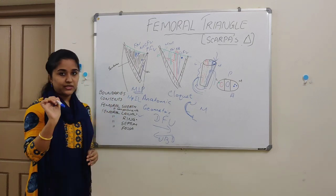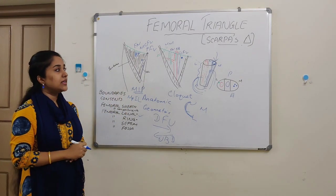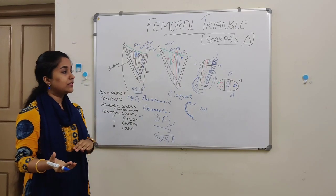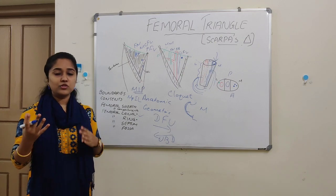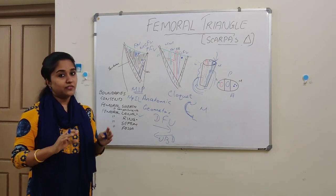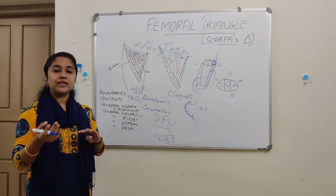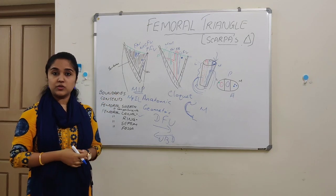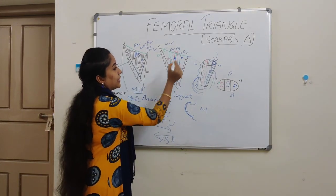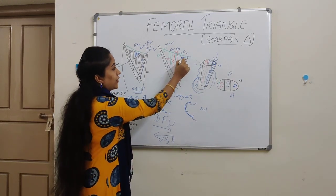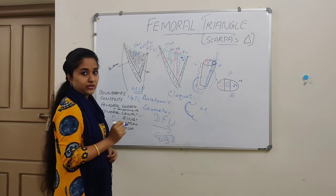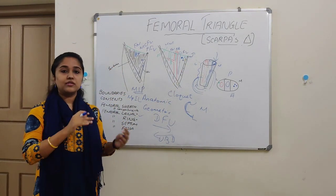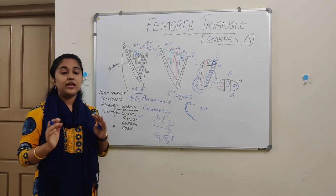The femoral artery is palpated at the mid-inguinal point. There can be inguinal hernia as well as femoral hernia. The inguinal hernia is the most common hernia overall, but in females the most common hernia is femoral hernia. To differentiate between inguinal and femoral hernia with relation to the pubic tubercle: femoral hernia is inferolateral to the pubic tubercle, whereas inguinal hernia is superomedial to the pubic tubercle.